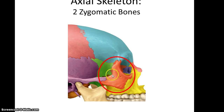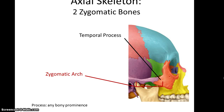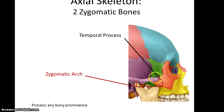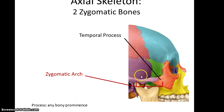Zygomatic bones — we have one on each side. It forms the cheeks basically. The zygomatic bone has a temporal process. That temporal process will articulate with the zygomatic process of the temporal bone. Together, these two processes form the zygomatic arch. So the zygomatic bone's temporal process and the temporal bone's zygomatic process combine to create the larger structure called the zygomatic arch.